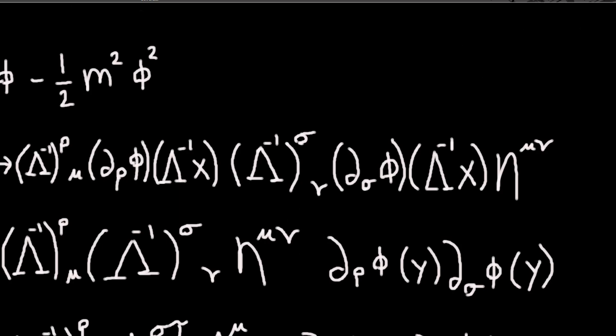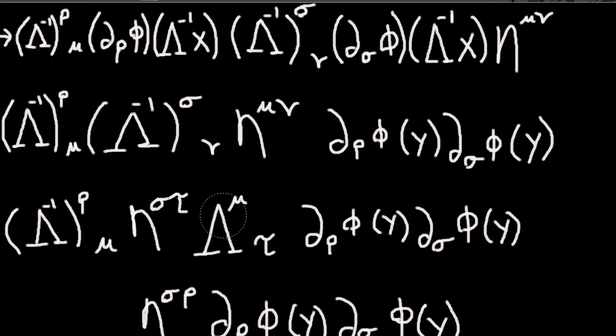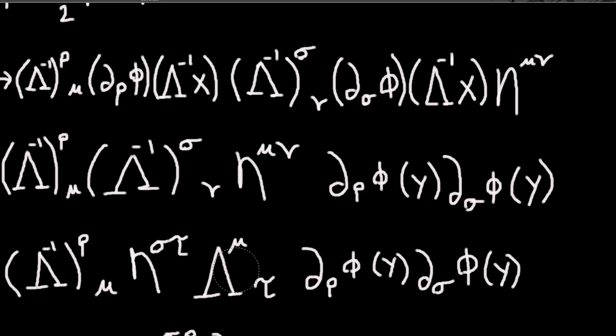So if I just use that identity that I showed, I get another, instead of an inverse Lorentz transformation times the Minkowski metric, I get Minkowski times the lambda itself. And the usefulness of that is now I have, again, I can move this over here. The fact that the eta is here and lambda is here doesn't prevent me from multiplying these two things.